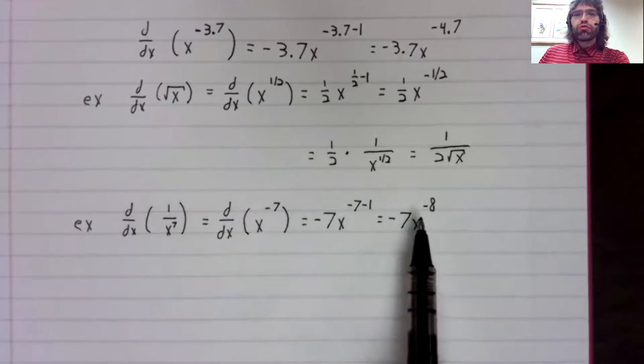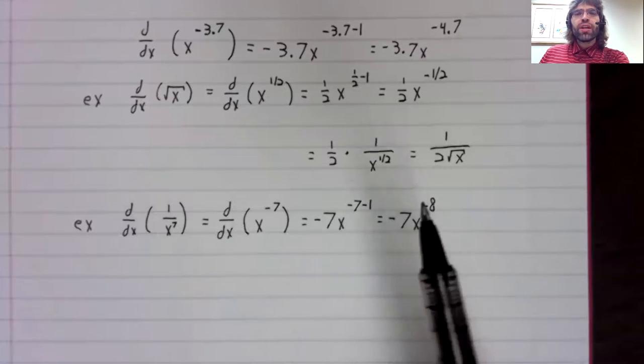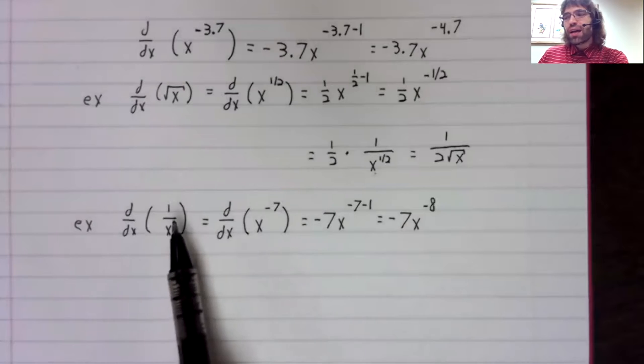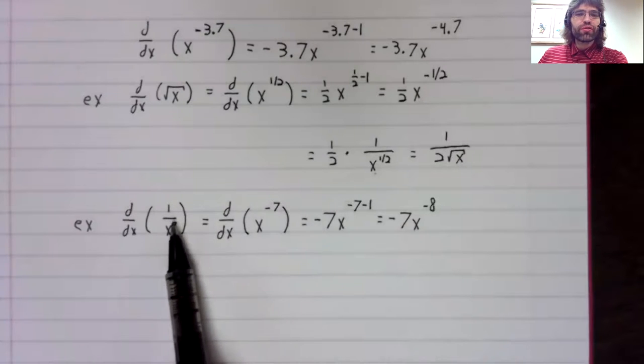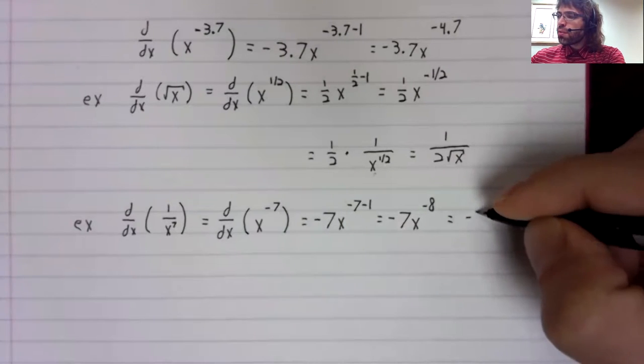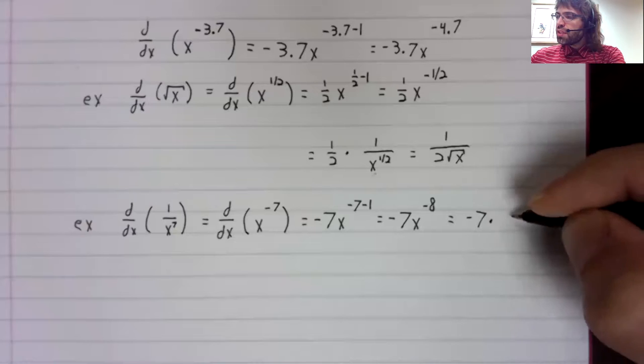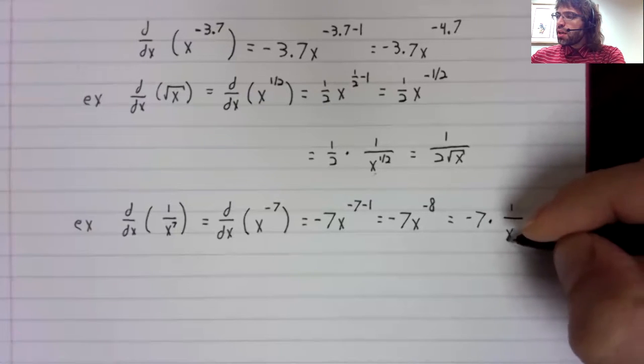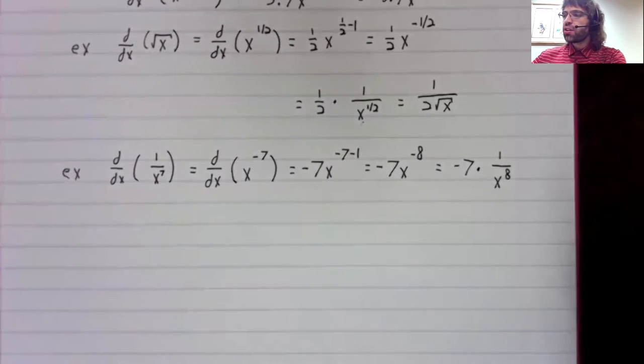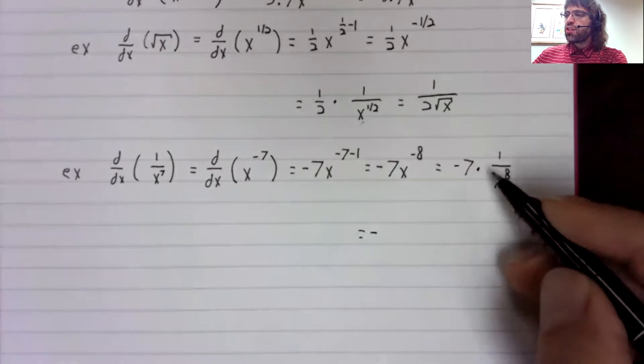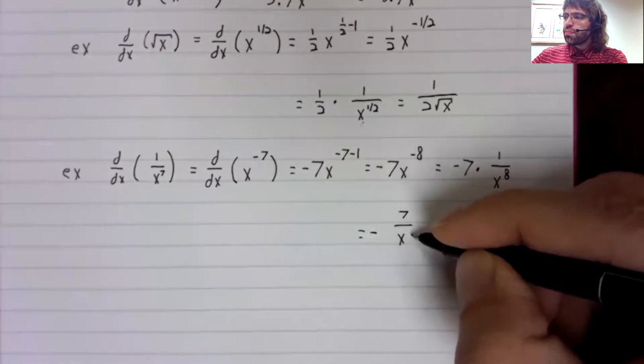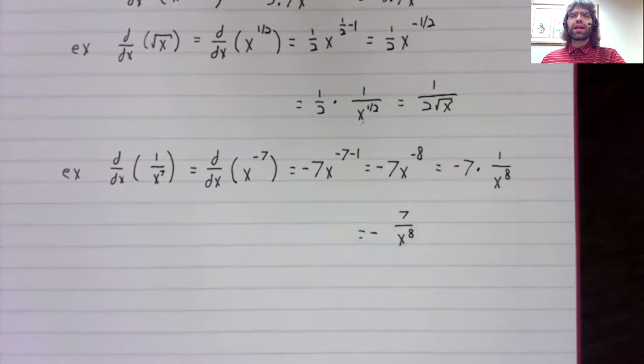And if we wanted to rewrite this a little, we could, using the same rule we use to go from here to here. And for that matter, the same rule we use to go from here to here. A negative power is the same as a positive power in the denominator. And we could then do this multiplication: negative seven over x to the eighth.